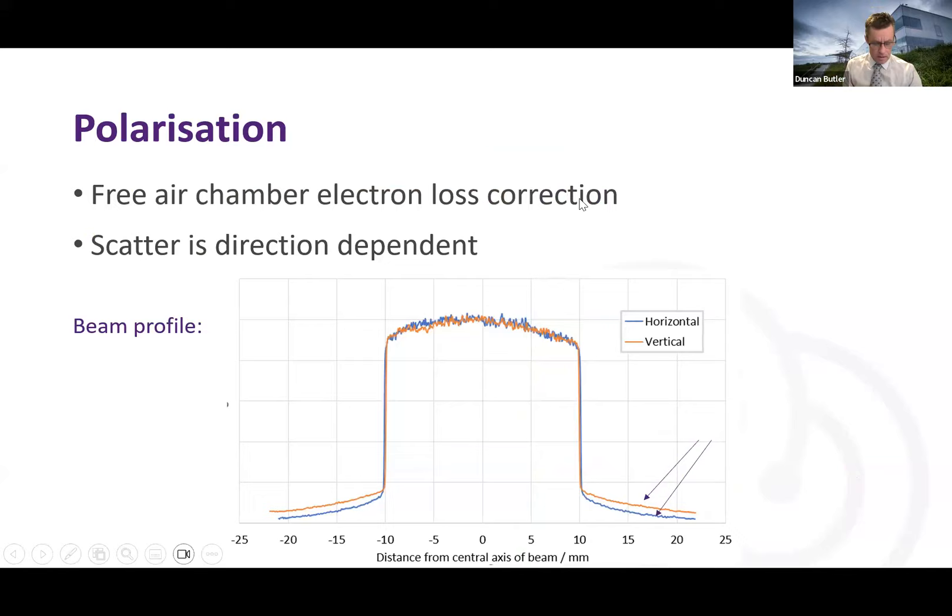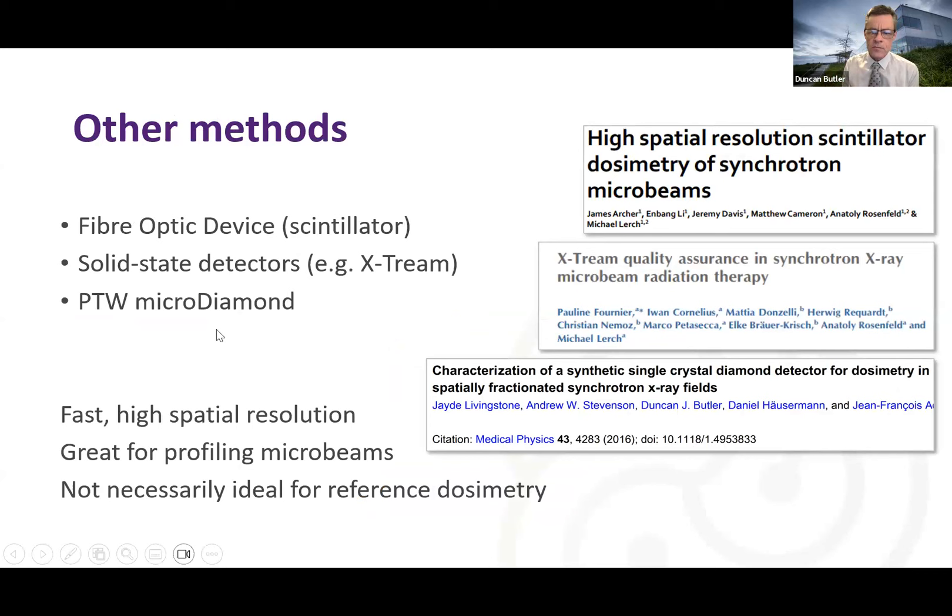And this plot shows something that took me a while to get my head around. Because the beam is polarized, it propagates through water a bit differently than if it wasn't polarized. In the field there's no difference, but the scattered radiation does show a slight difference, horizontal versus vertical, which you can see in this plot here. One of them is higher than the other. And as I said before, that's quite hard to model because many codes assume random polarization.